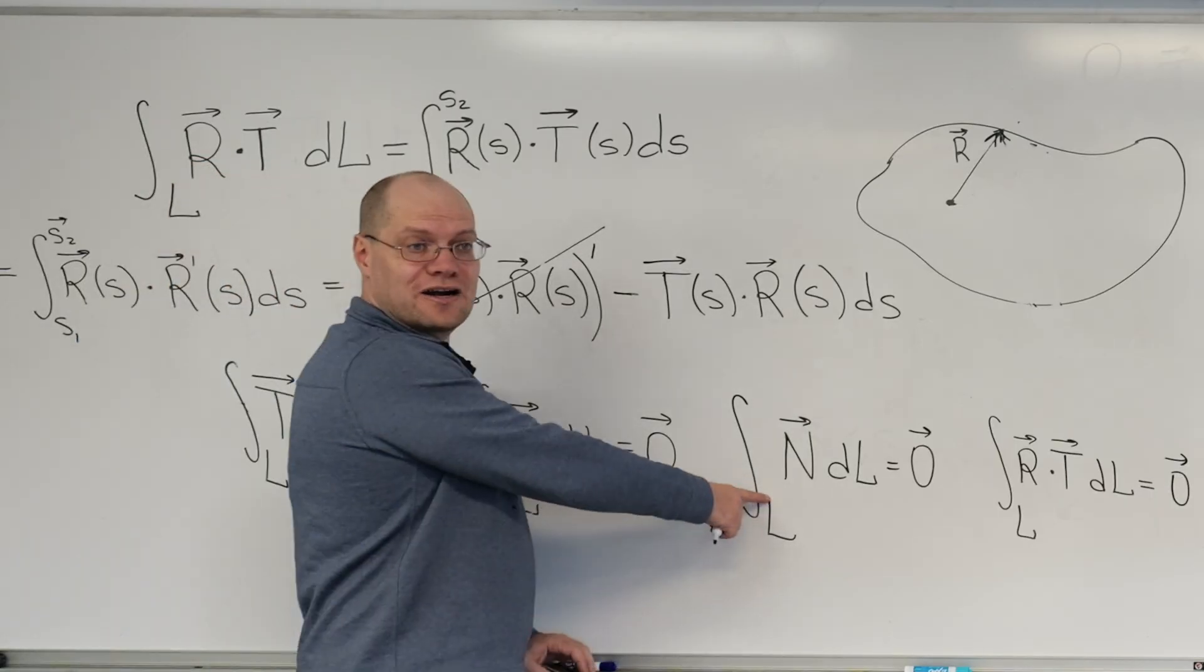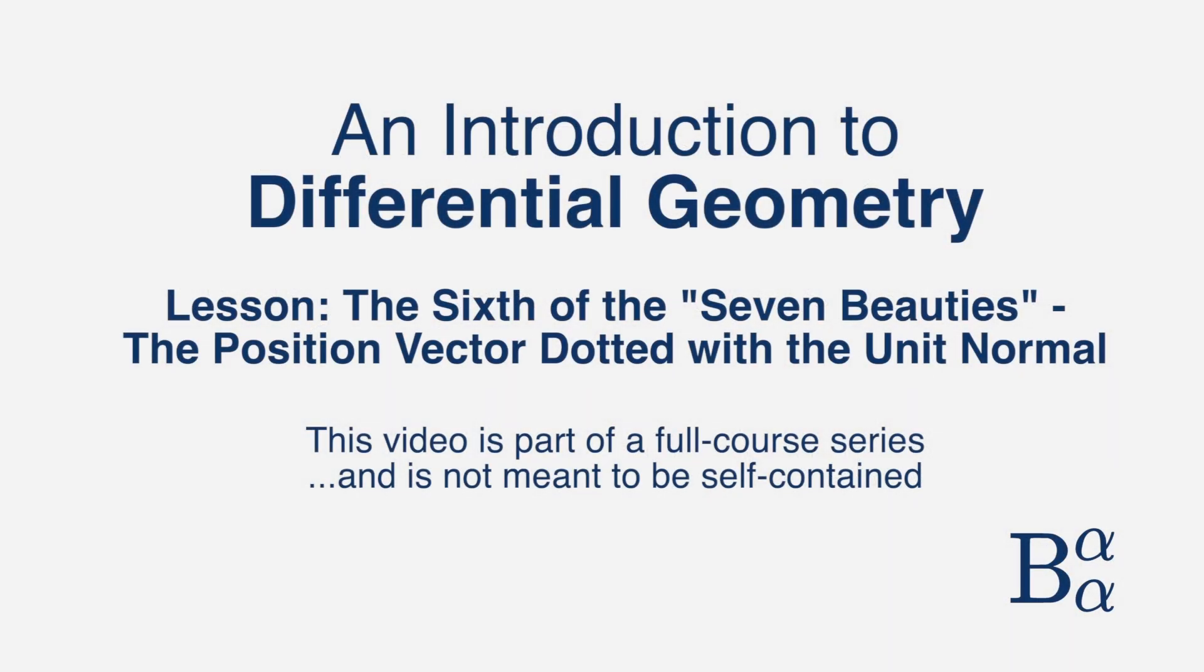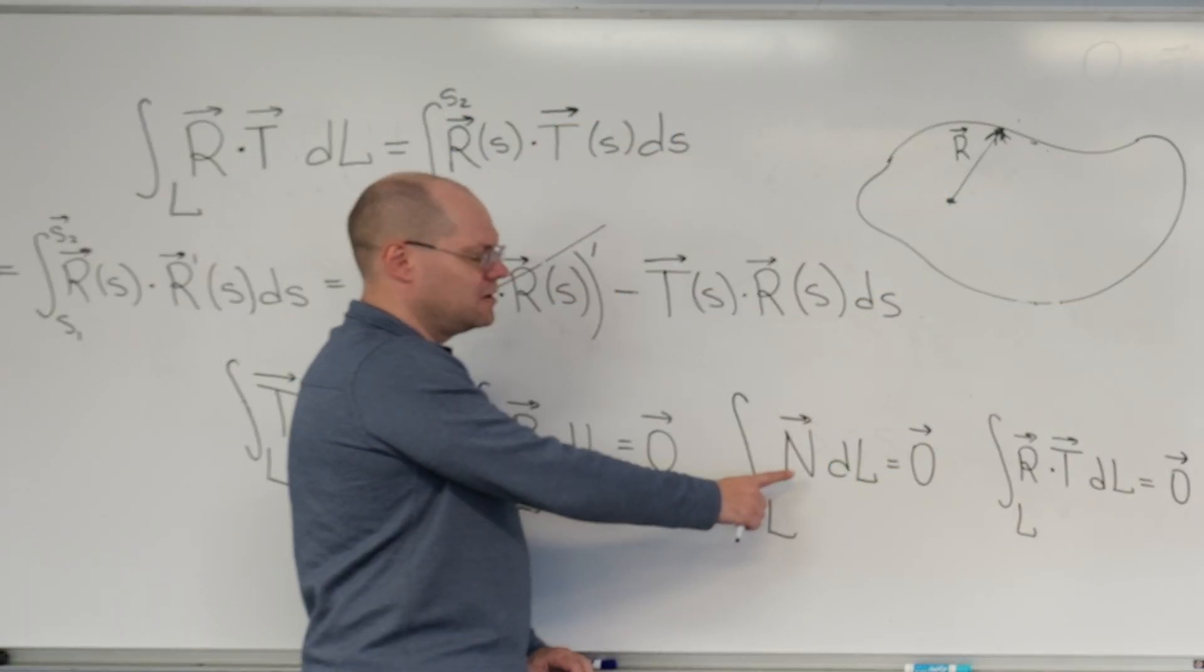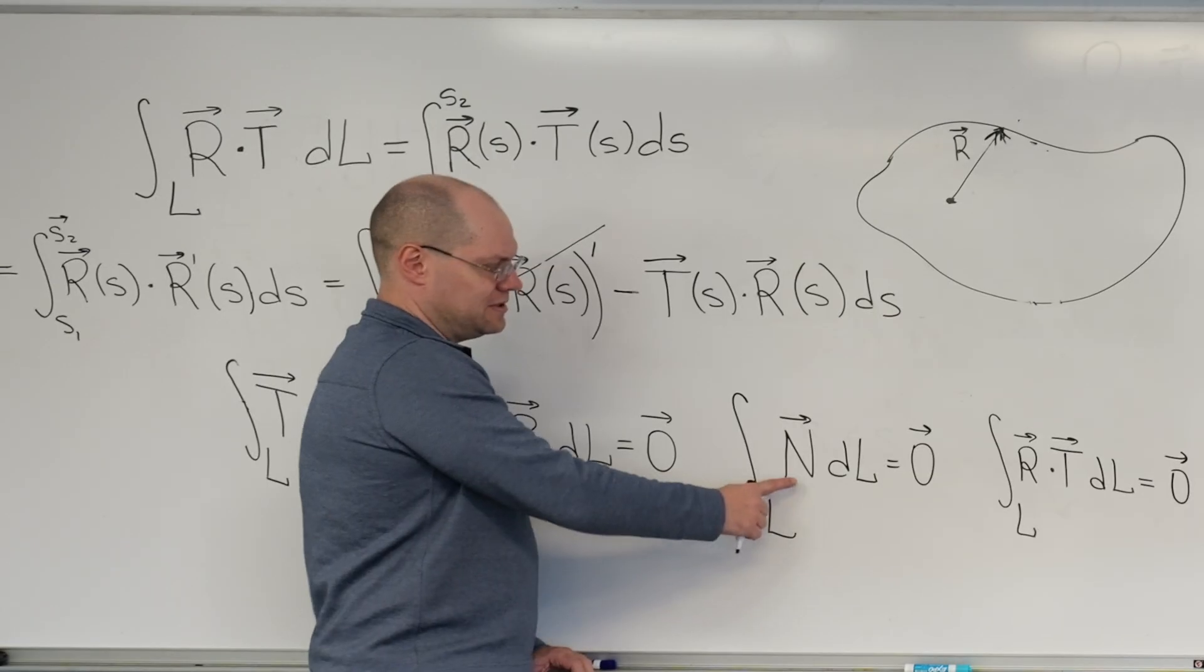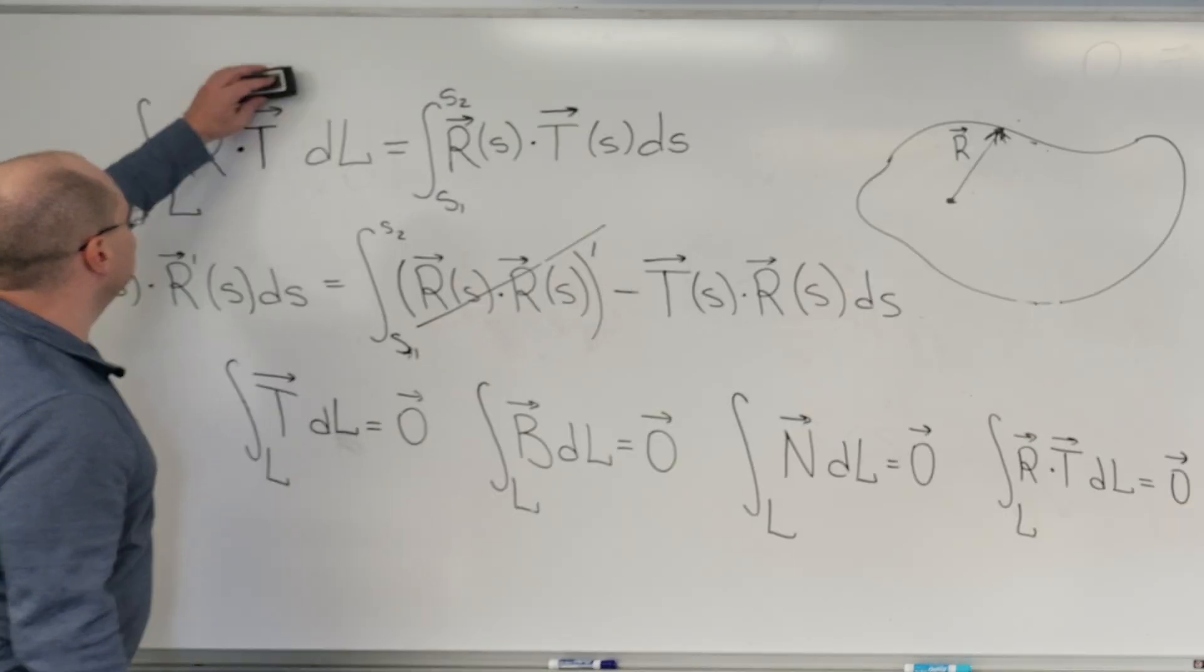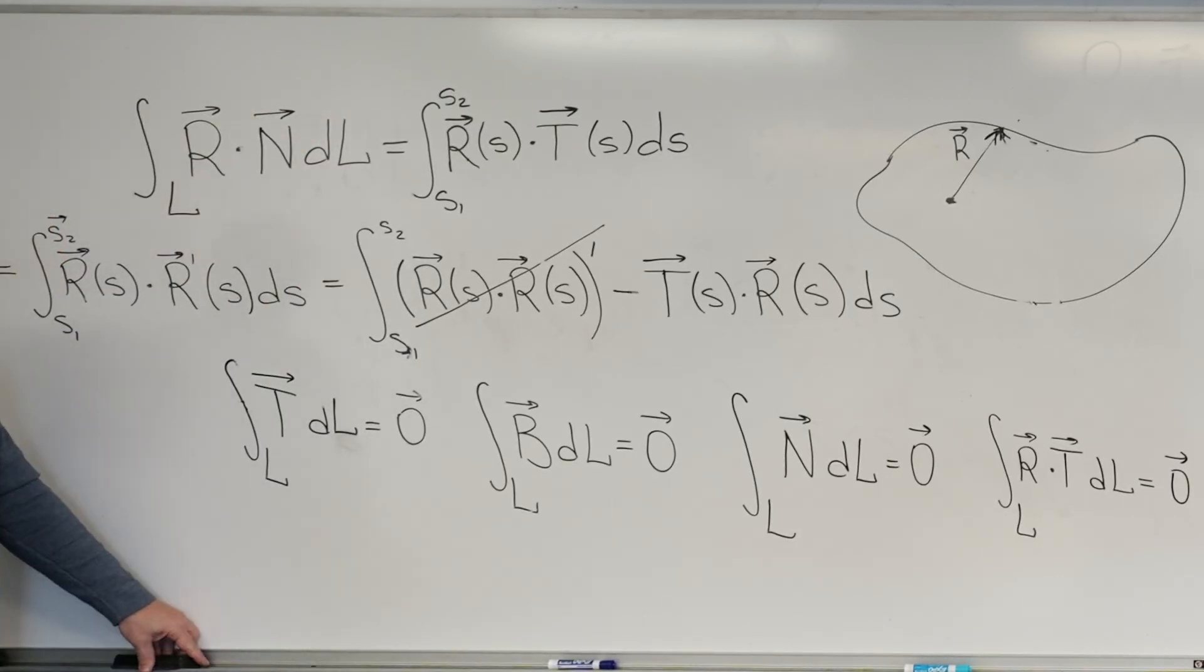So what are we doing next? R dotted with N. Again, to repeat, why is that of interest? Because it doesn't depend on the origin and so it's a characteristic of the curve. R dotted with N, and I will tell you right now that we will have to go a little bit outside of the scope of where we're at right now to do this.